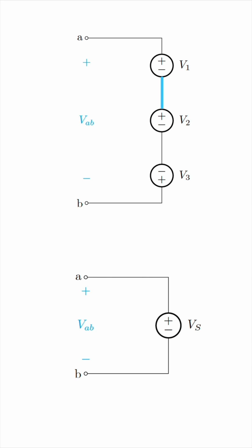When the minus of one source is connected to the minus of another, like between V2 and V3, you subtract them. Same thing for plus to plus, of course. So in this example, VAB would be VS, this equivalent voltage source, and that would be V1 plus V2 minus V3.